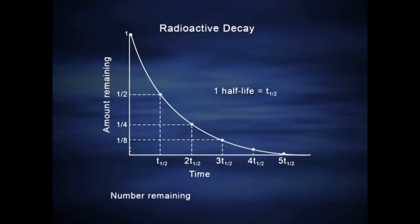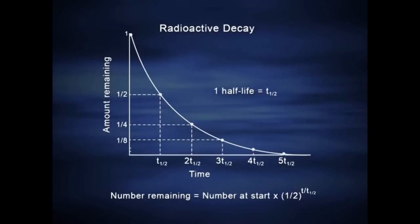The number of particles left at any given moment is equal to the number you start with times one-half, raised to the power of the time which you've elapsed divided by the half-life. And the half-life is unique for every different isotope — ranging from fractions of a second, for atoms that we rarely see, to tens of billions of years, longer than the age of the universe, for some of the heavy isotopes.